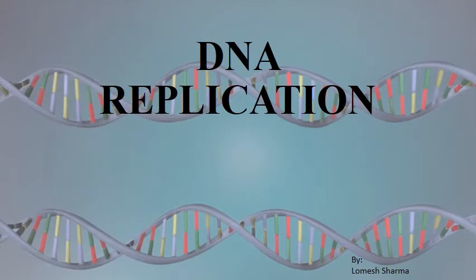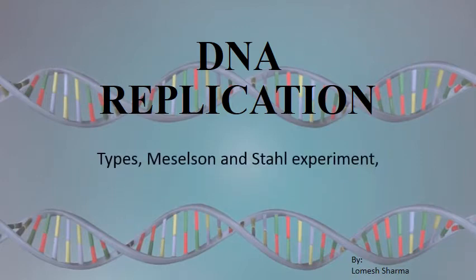Hello everyone, welcome back. In the last lecture we discussed the components of DNA and the Watson and Crick model of DNA. Today we will discuss the introduction of DNA replication, the types of DNA replication — conservative, semi-conservative, and dispersive — and the famous Meselson and Stahl's experiment which proved that DNA replication is semi-conservative in nature.